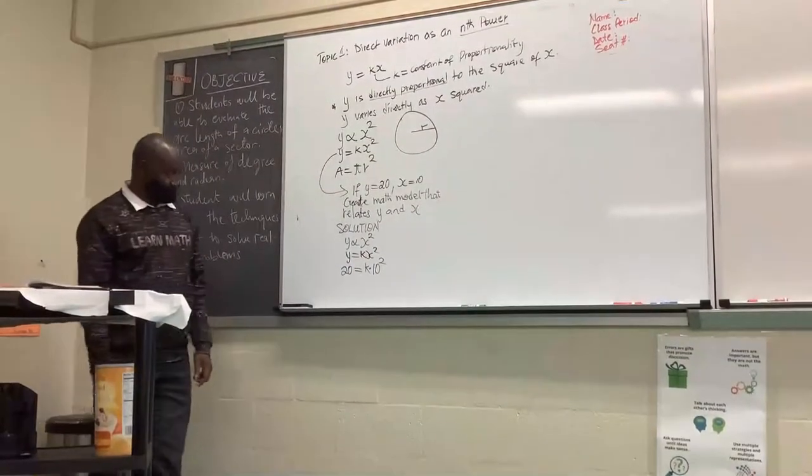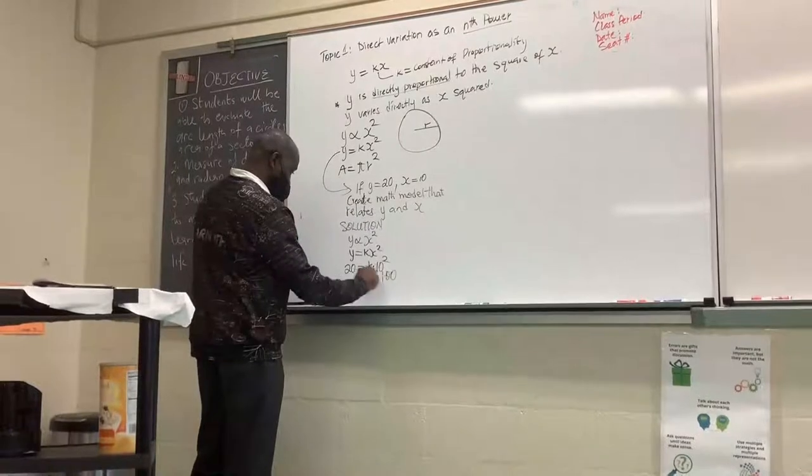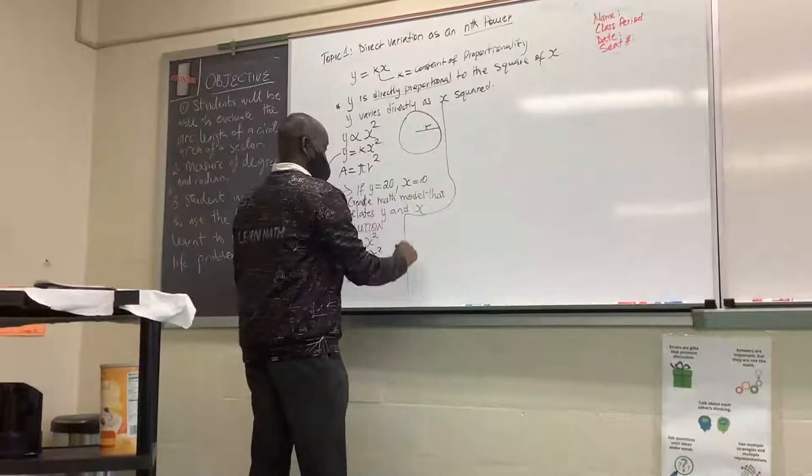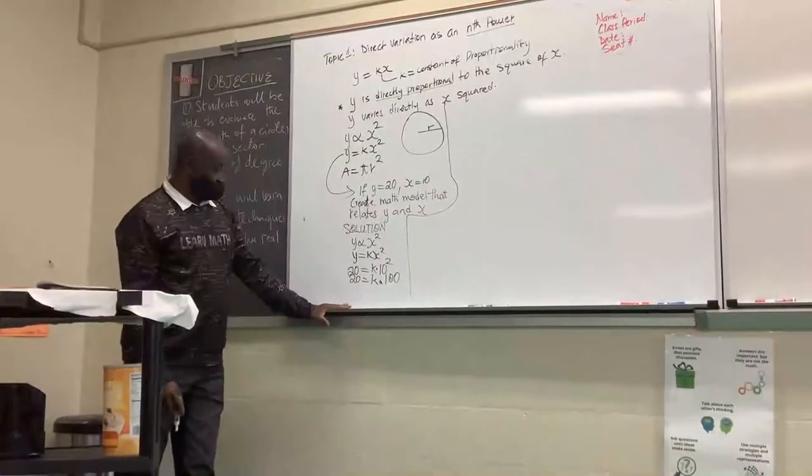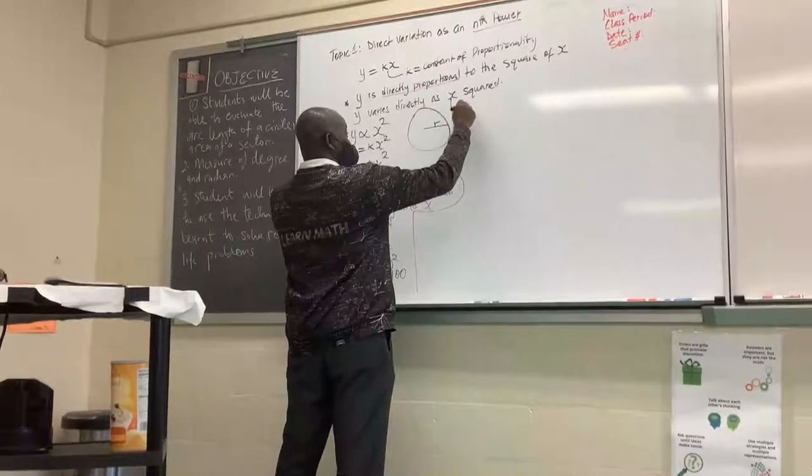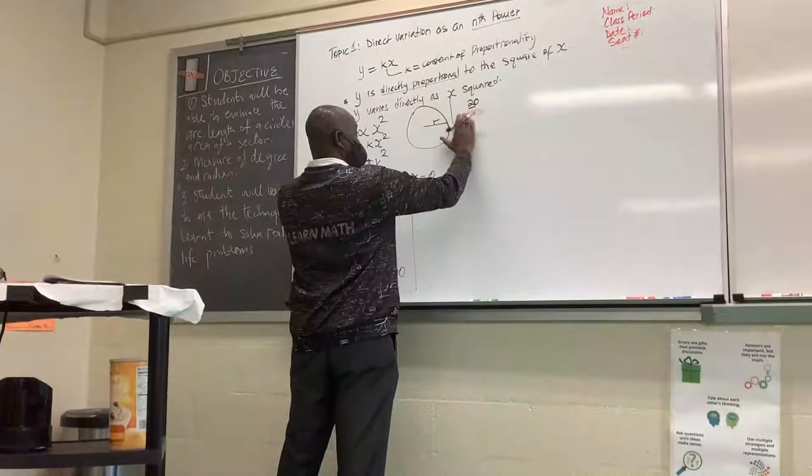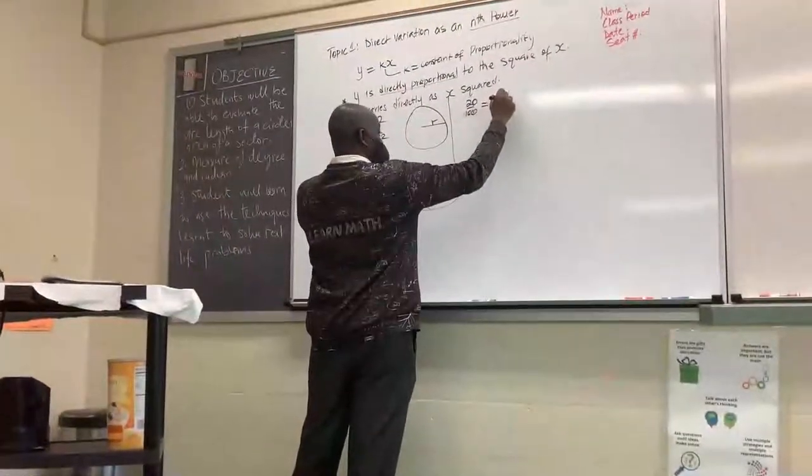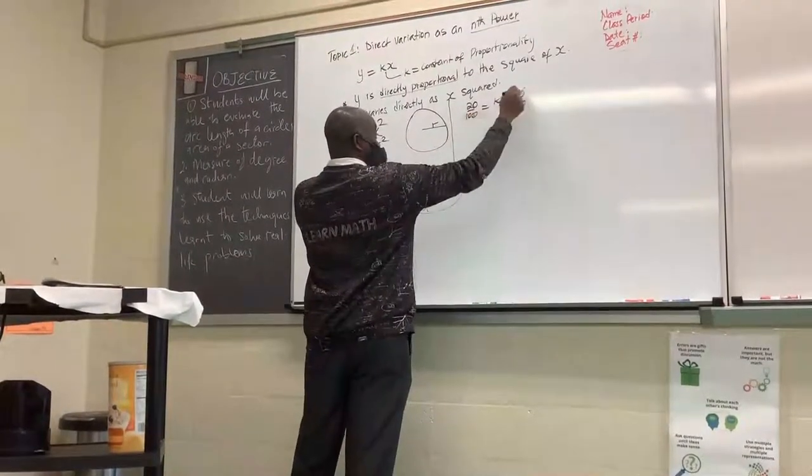So what is ten squared? One hundred. So this is k multiplied by one hundred equal to twenty. So what is the value of k? Two over ten, which is equal to one over five. Is that correct? So if we do twenty over one hundred, we're dividing both sides by one hundred, is equal to k multiplied by one hundred over one hundred. So this crosses out.